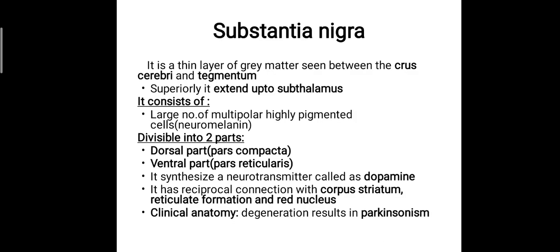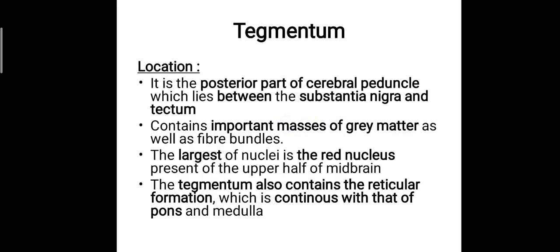In case of degeneration of the substantia nigra, dopamine production is reduced, and that will cause a clinical condition called Parkinsonism, causing involuntary tremors of the limbs and many other associated features. The tegmentum is the posterior part of the cerebral peduncle, which lies between the substantia nigra and the tectum. It contains important masses of grey matter as well as fibre bundles. The largest nucleus in the tegmentum is the red nucleus, present on the upper half of the midbrain. The tegmentum also contains the reticular formation, which is continuous with that of the pons and the medulla. The midbrain, pons, and medulla together constitute the brainstem.